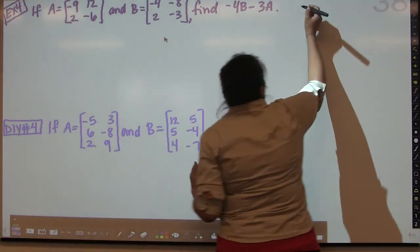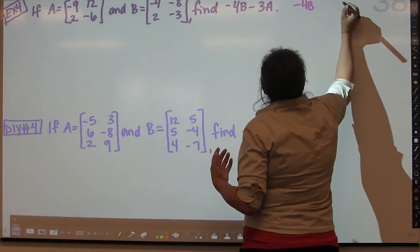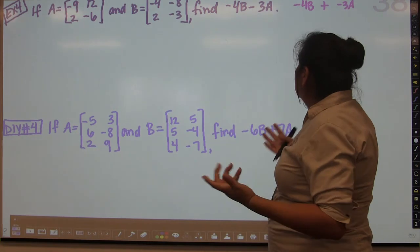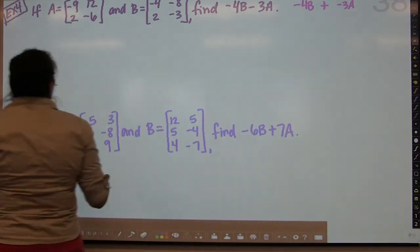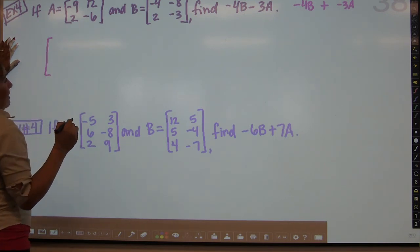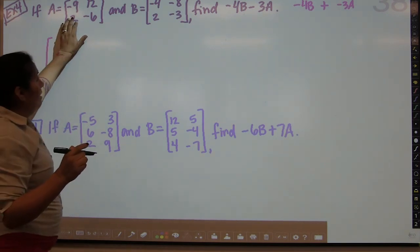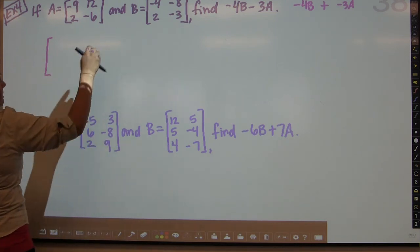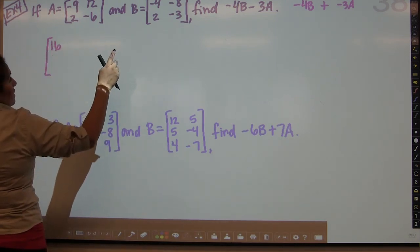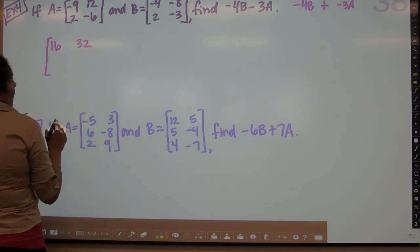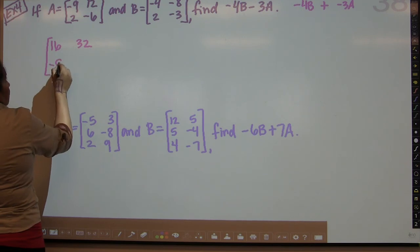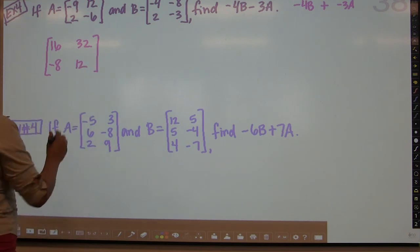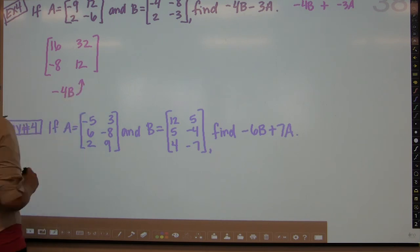Let's go with the second option. For negative 4B, take the B matrix and multiply all elements by negative 4. Negative 4 times negative 4 is positive 16. Negative 4 times negative 8 is positive 32. Negative 4 times 2 is negative 8. Negative 4 times negative 3 is positive 12. So the matrix for negative 4B is: 16, 32, negative 8, 12.